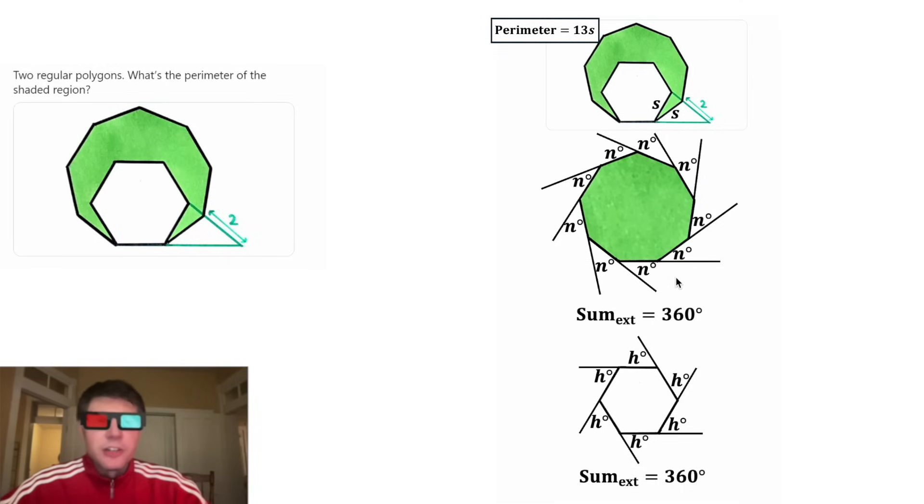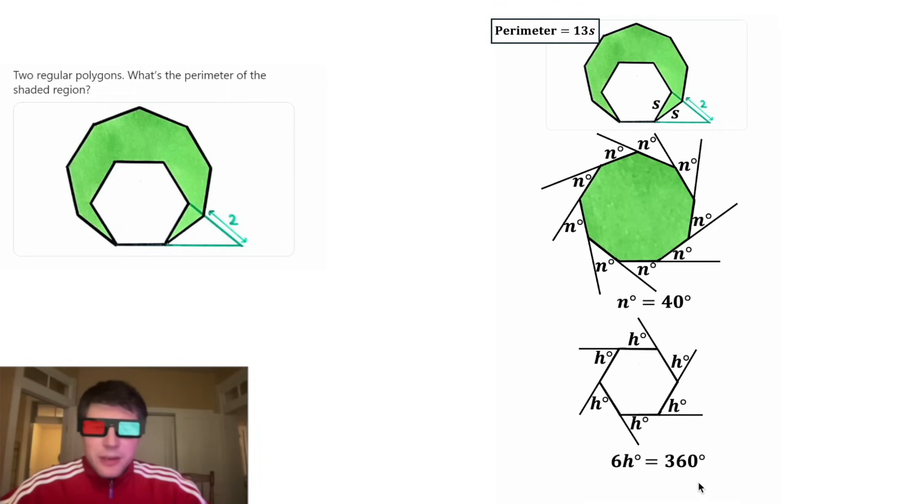The sum of these nine external angles would be 9N, and the sum of these six external angles would be 6H. Going back to this equation, we can divide both sides by nine, and we get N degrees is equal to 40 degrees. And then we can do the same thing down here. We can divide both sides by six, and that gives us H is equal to 60 degrees.